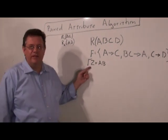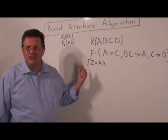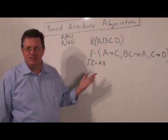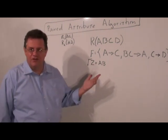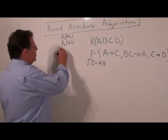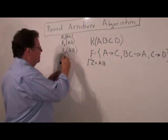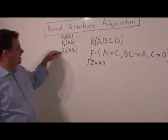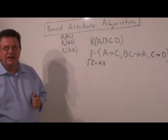At this point, Z equals AB. When you're down to two attributes, you know this is going to be in Boyce-Codd normal form. So there's really no point in going any further with this. And we're actually done. So R3 would be AB. So the decomposition is AB, AC, AD. And we're now done.